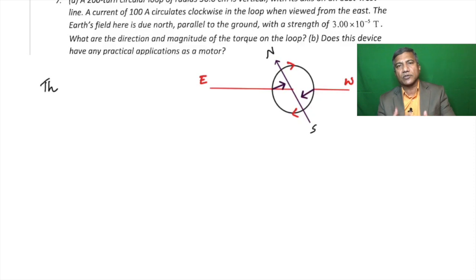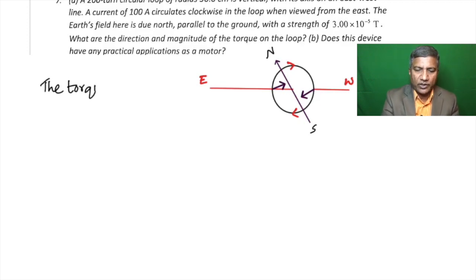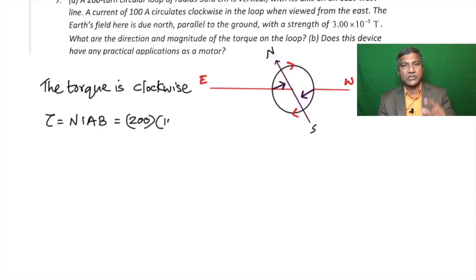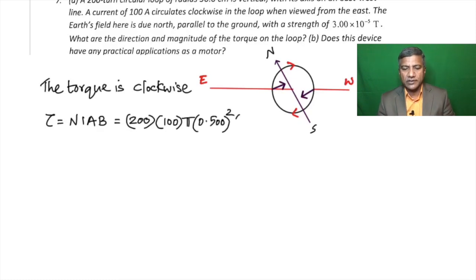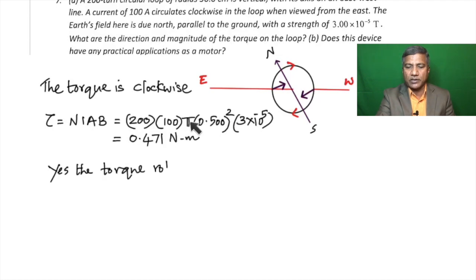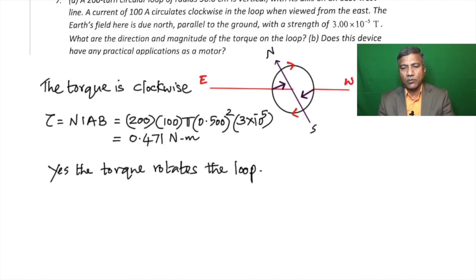The torque is clockwise as determined by the right-hand rule in three dimensions. The magnitude of the torque is τ = NIAB, since the angle φ = 90°. With N = 200, I = 100 A, area = π(0.5)² m², and Earth's field strength, this gives 0.471 N·m. Part B confirms this has practical application as a motor — if arranged to rotate freely, it will continuously keep rotating.